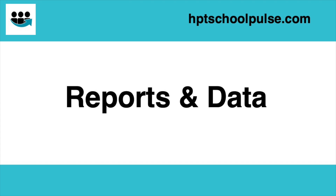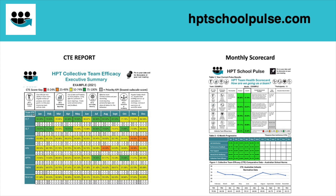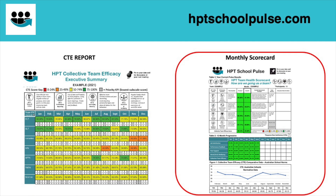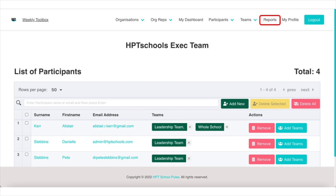There are two reports that you'll receive as part of the School Pulse program. Number one is your Collective Teacher Efficacy, or CTE, report. And number two is your monthly scorecard. You'll receive these at the end of each month. These are housed on the School Pulse portal under the reports tab.